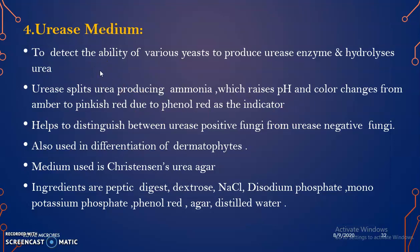The fourth biochemical medium is urease medium, used to detect the ability of various yeasts to produce urease enzyme and hydrolyse urea. Urease is an enzyme capable of splitting urea and producing ammonia. On producing ammonia, the pH rises and the color of the medium changes from amber to pinkish-red due to the phenol red indicator. It helps to distinguish between urease-positive fungi and urease-negative fungi, and can also be used in differentiation of dermatophytes.